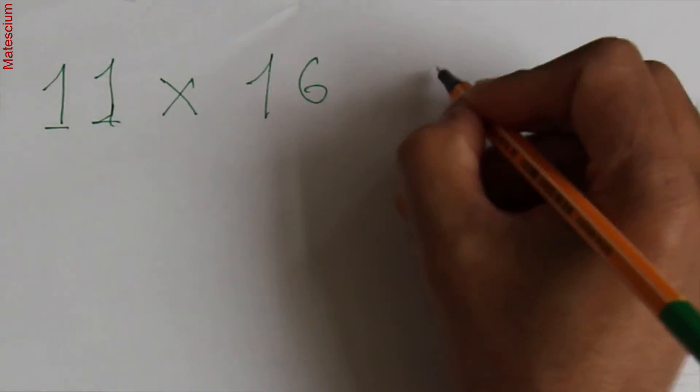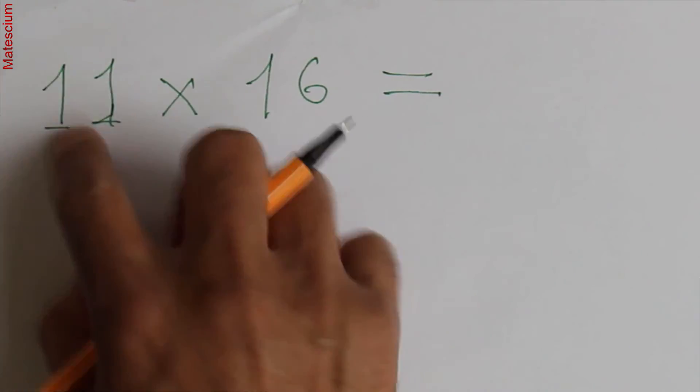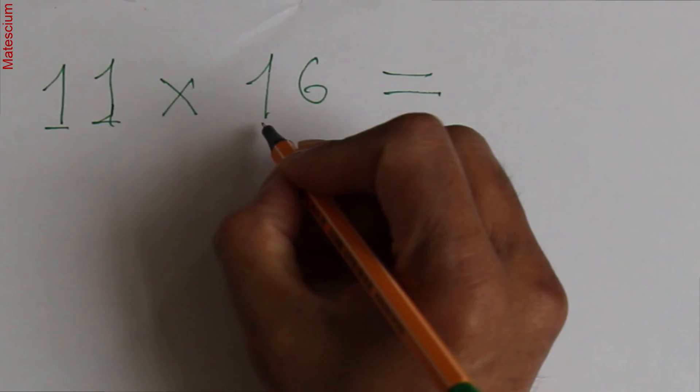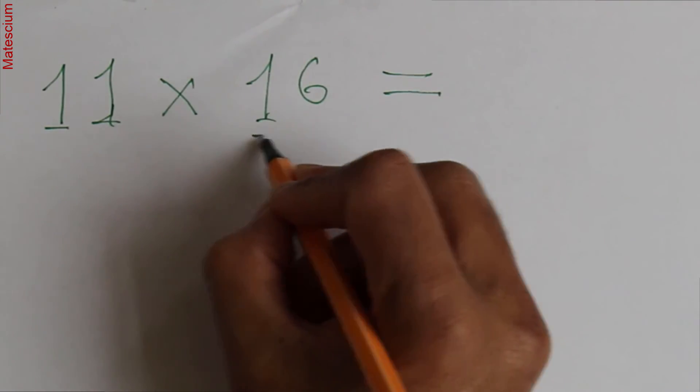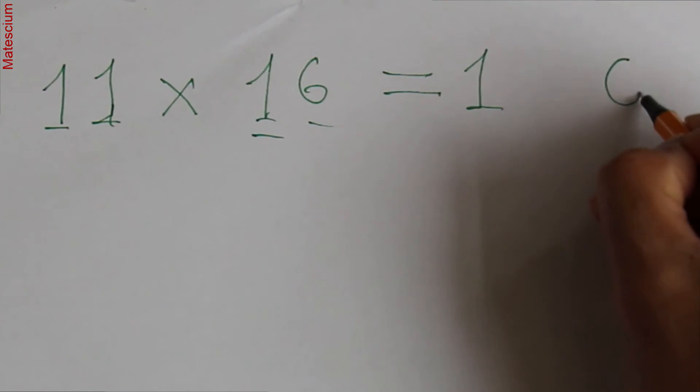Do you know you can multiply any number by 11 within 5 seconds? Let's say you multiply 16 by 11. Within 5 seconds you can multiply it, unbelievably very quickly. How is it possible, right?